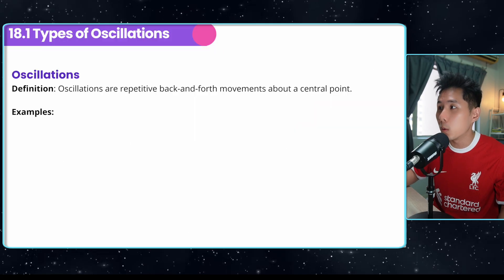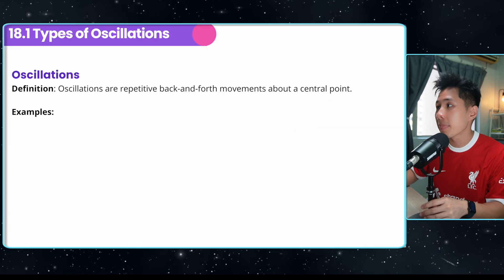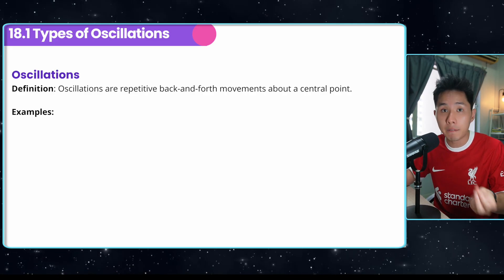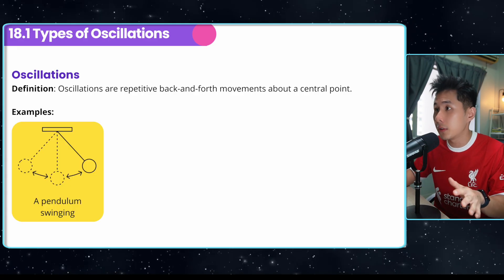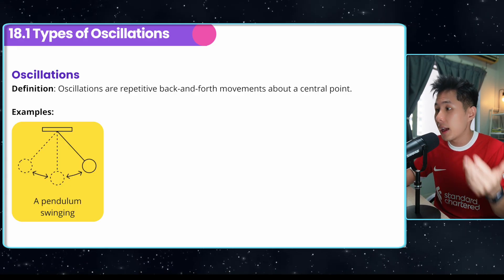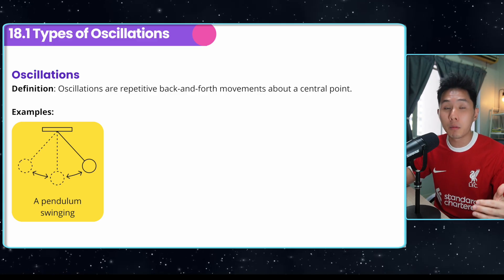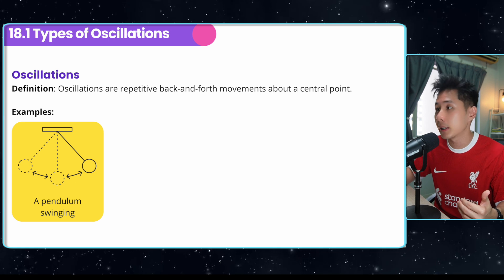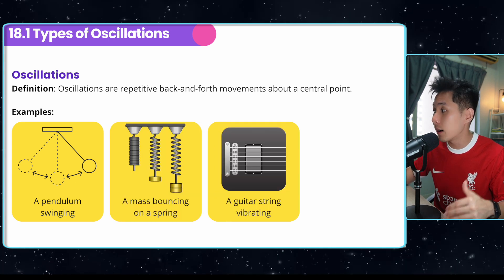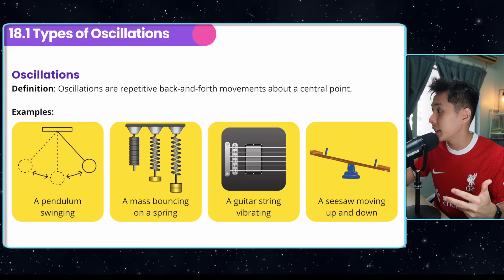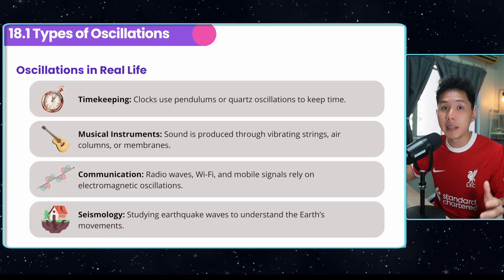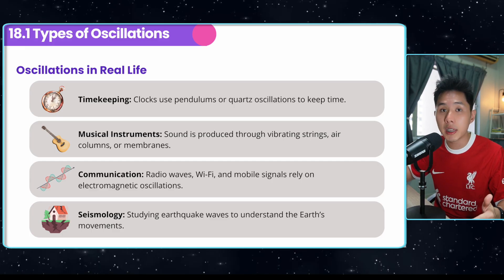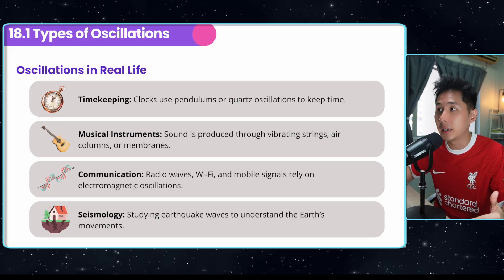First of all, we're going to talk about what oscillations is in physics. They are repetitive back and forth movement about a central point. A few examples: a pendulum swinging, a mass bouncing off a spring up and down, a guitar string vibrating, and a seesaw moving up and down. A few applications of oscillations in real life are timekeeping, musical instruments, communication, and seismology.